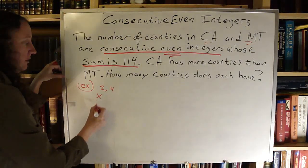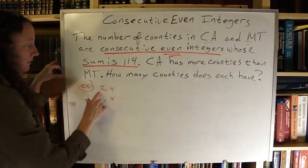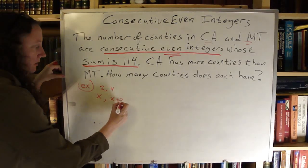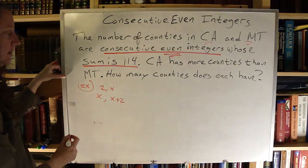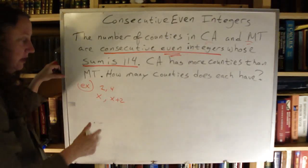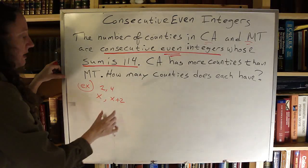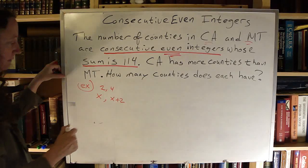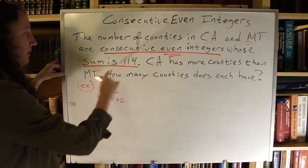If my first integer is x, my second integer is 2 more than that, so it's going to be x plus 2. Now I have expressions to represent the number of counties in California and the number of counties in Montana. I don't know which is which yet — we're going to figure that out. Their sum is 114.